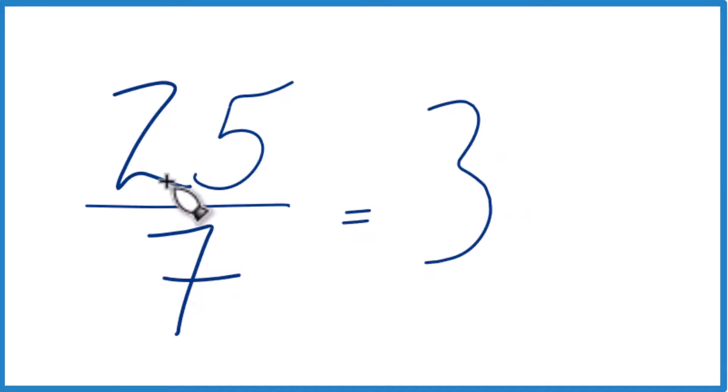And I'll have a remainder of 4, because 3 times 7 is 21, and 25 minus 21 is 4. So that's my remainder, which becomes the numerator here. Then I just keep the 7 the same.